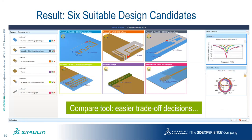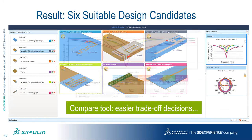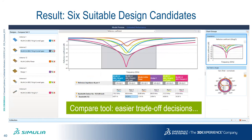Antenna Magus also has a compare tool where you can look at all antennas in your collection side by side, visually comparing what they look like relative to each other and comparing their performance characteristics to ensure they all satisfy the requirements.